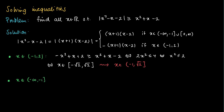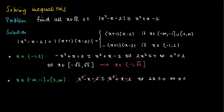Now the other case: x is in minus infinity to minus 1, union 2 to infinity. So the absolute value of x squared minus x minus 2 equals x squared minus x minus 2, which should be greater or equal than x squared plus x minus 2. We see that x squared and minus 2 cancel on both sides, leaving the condition that minus x should be greater or equal than x, meaning 2x should be at most 0, so x should be smaller or equal than 0. Combined with the interval for this case, x should belong to the interval minus infinity to minus 1.